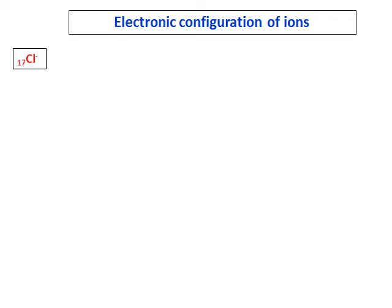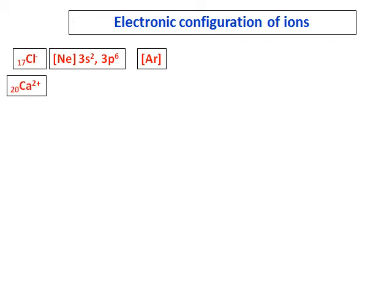Now let's do electronic configurations of ions. Cl has 17 electrons; Cl− has one extra electron, giving [Ne] 3s2 3p6 — the same as argon. Calcium 2+ has lost 2 electrons, leaving 18 electrons, which is also the configuration of argon. All elements lose or gain electrons to achieve the nearest inert gas configuration.